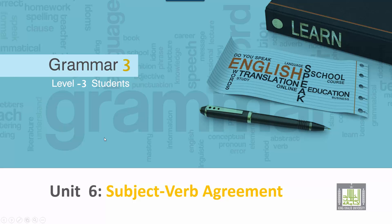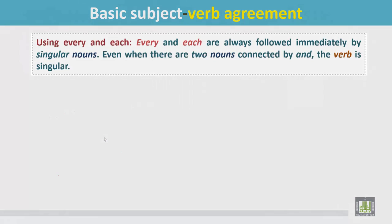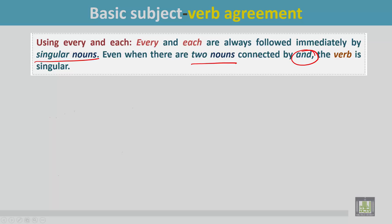Grammar 3 for Level 3 students, Unit 6: Subject-Verb Agreement. Basic Subject-Verb Agreement — using 'every' and 'each'. Every and each are always followed immediately by singular nouns. Even when there are two nouns connected by 'and', the verb is singular.